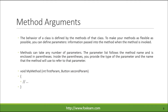The behavior of a class is defined by the methods of that class. To make your methods as flexible as possible, you can define parameters — information passed into the method when the method is invoked. Methods can take any number of parameters. The parameter list follows the method name and is enclosed in parentheses, where you provide the type of the parameter and the name the method will use to refer to it.